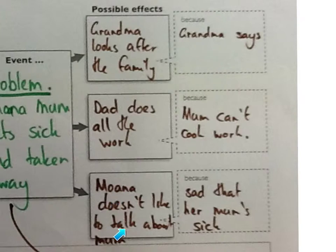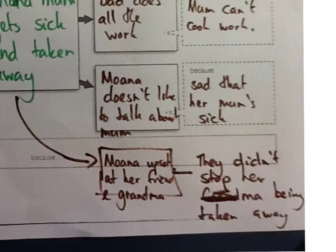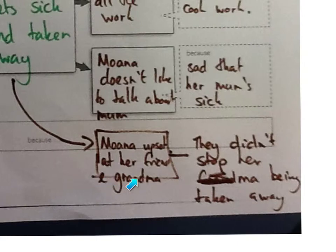Down here, Moana doesn't like to talk about Mum. Down here, she's sad that her mum's sick. And furthermore, down here, Moana's upset at her friends and Grandma, because they didn't stop her mum from being taken away.